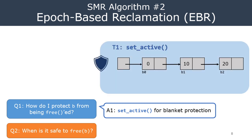To illustrate: thread T1 calls setActive, which protects all pointers. Since every pointer is protected, you can safely iterate through all the blocks — through B0 from the head pointer, then travel to the next pointer to B1 without worrying about safety, and B2 as well, all protected by this blanket protection of the setActive function.